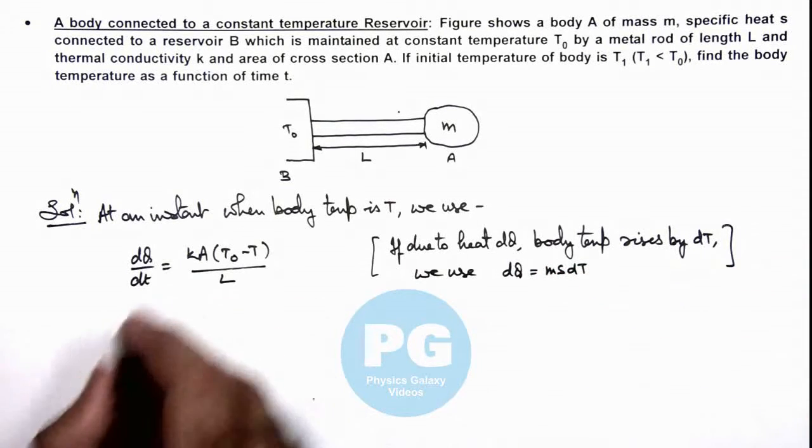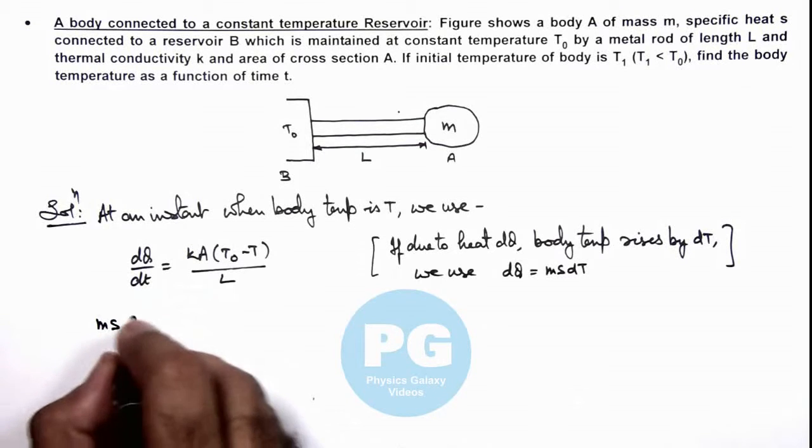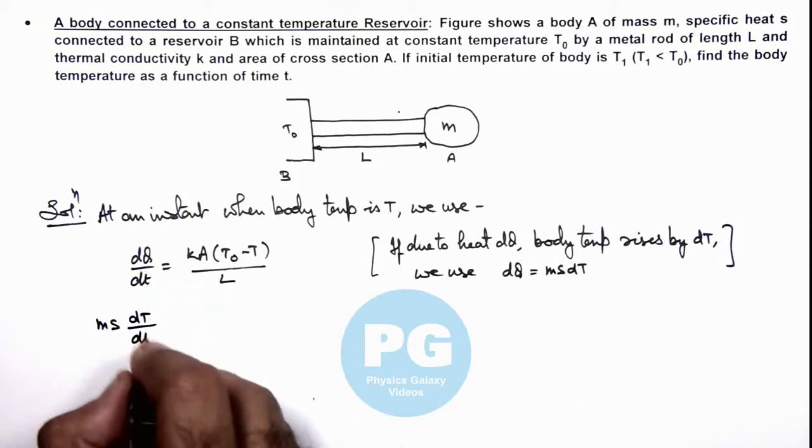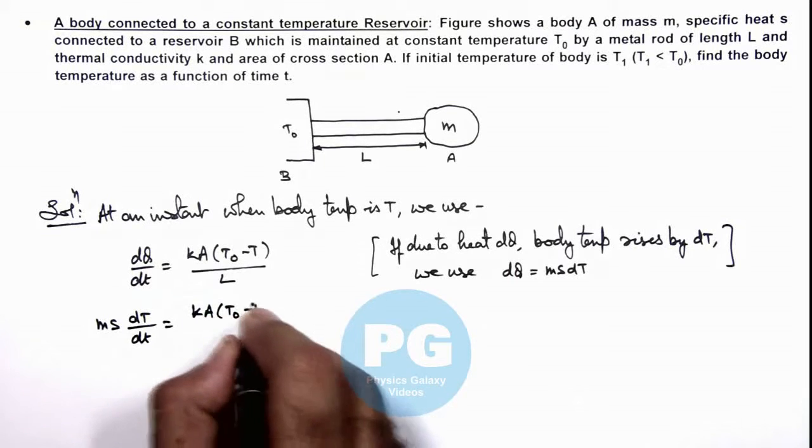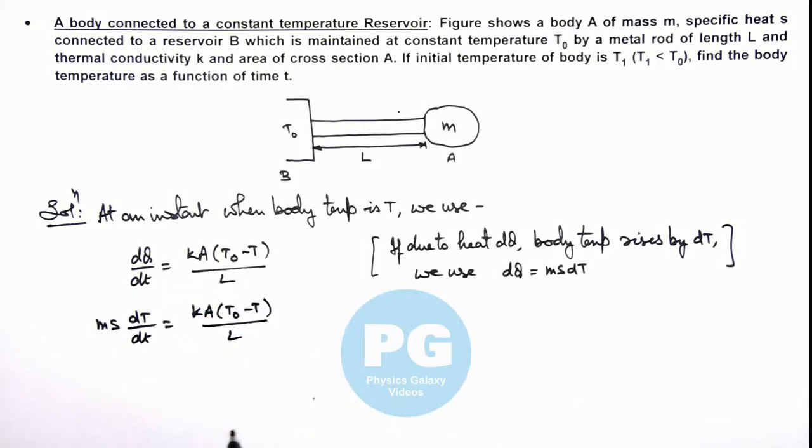So if we use this relation, msdT/dt is equal to kA(T₀ - T) divided by L. Further rearranging these terms gives us dT/(T₀ - T) is equal to kA/(msL) multiplied by dt.